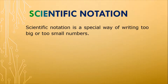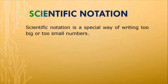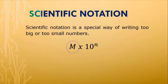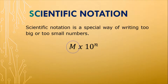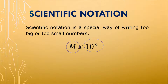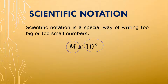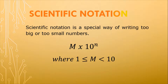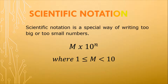We can say that a number is in scientific notation when it is written as a product of two numbers. The first one is a number greater than or equal to one but less than 10. The other one is an integral power, and our integral power can be positive or negative. M times 10 to the power of n, where M is a number less than 10 but greater than or equal to one.